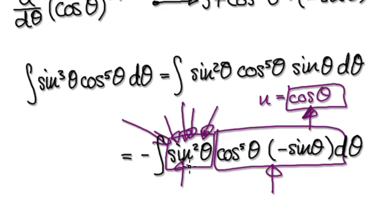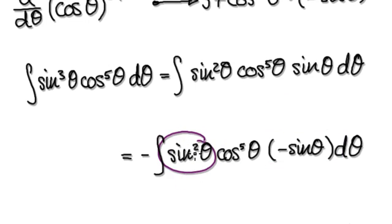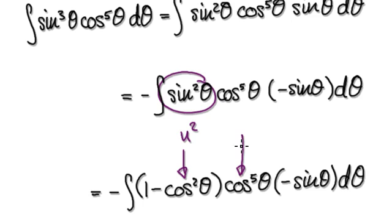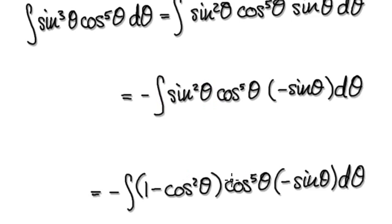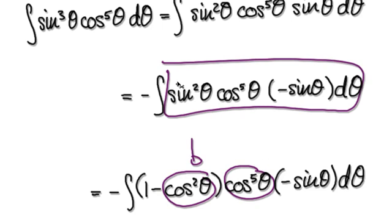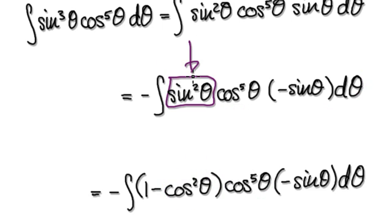It's just this thing here is annoying. So replace this with 1 minus cos squared theta. Now you can put u into here — this would be u squared, this would be u to the power of 5. Because everything is now in terms of cos, you can make the substitution. Up here you couldn't, because you still had the annoying sine lingering around.